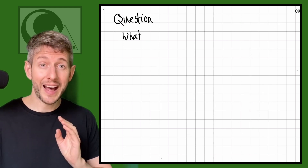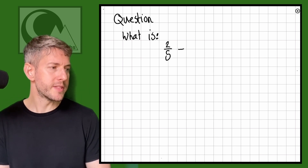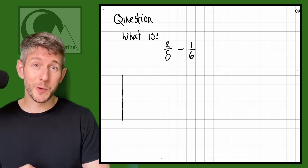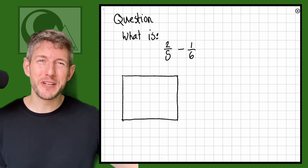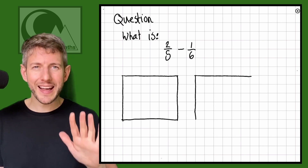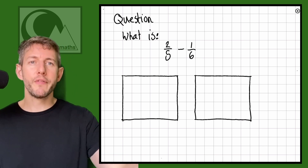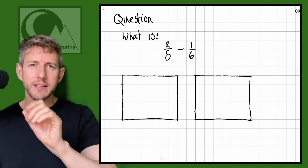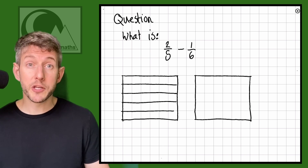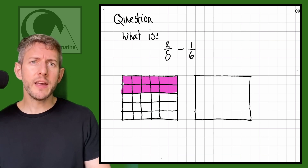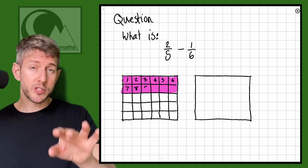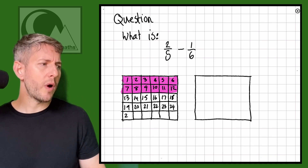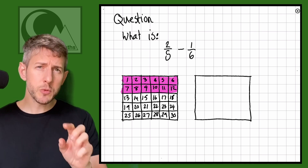Let's try another example. Question two: what is two fifths take away one sixth? I'm going to draw the rectangles again — they'll be quite big but useful to visualize. The takeaway in the middle doesn't change anything, it just means we're taking away rather than adding. I draw my two rectangles, five on one side and six on the other. I divide the first rectangle into five pieces and shade two of them — that's two fifths, which I can also see as twelve thirtieths.